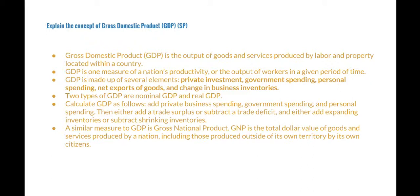Two types of GDP are nominal and real GDP. Nominal GDP is stated in the price levels in which the GDP was measured, and real GDP is the nominal GDP adjusted for changes in prices.